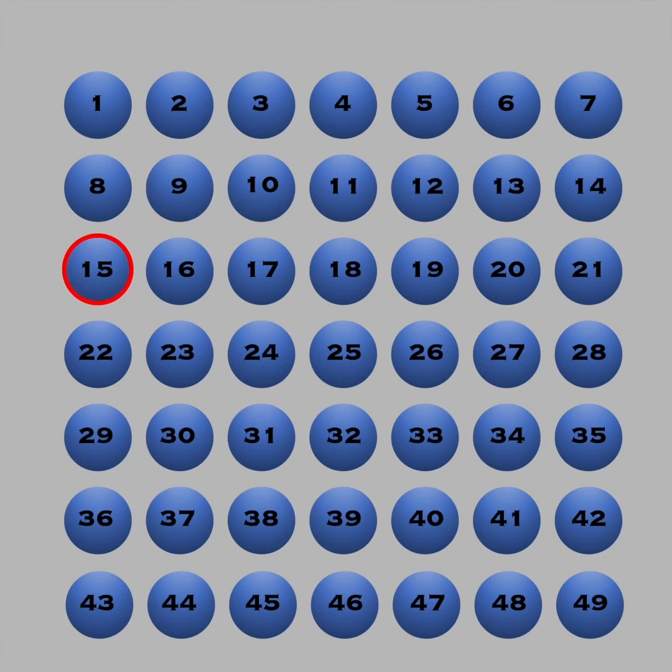If the six numbers on your ticket, regardless of their order, match the numbers drawn by the lottery, you're a winner.